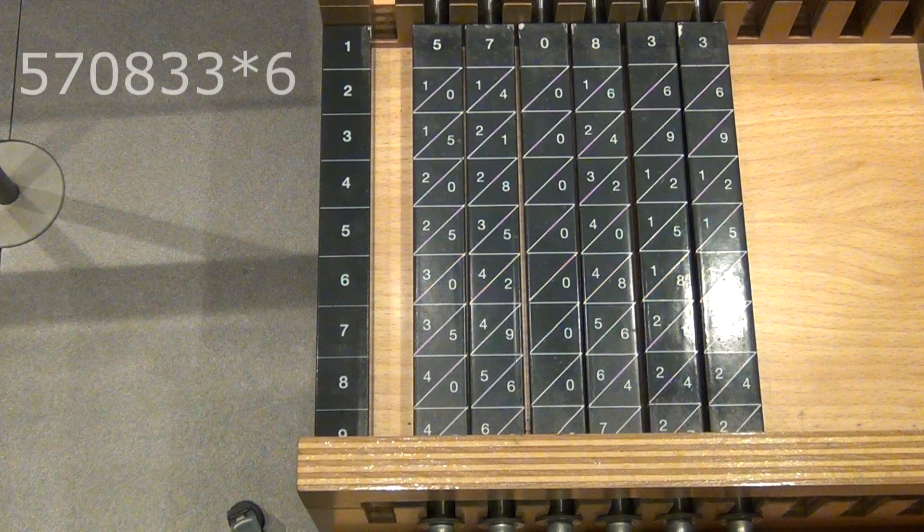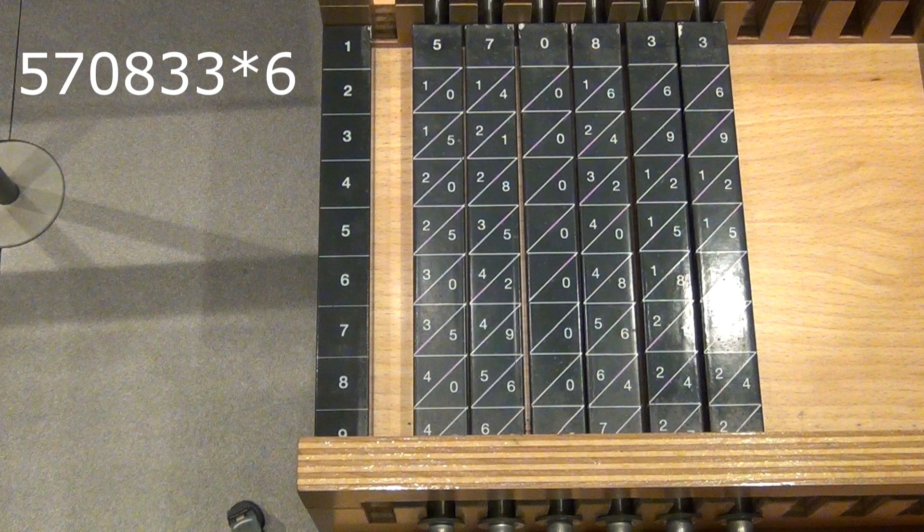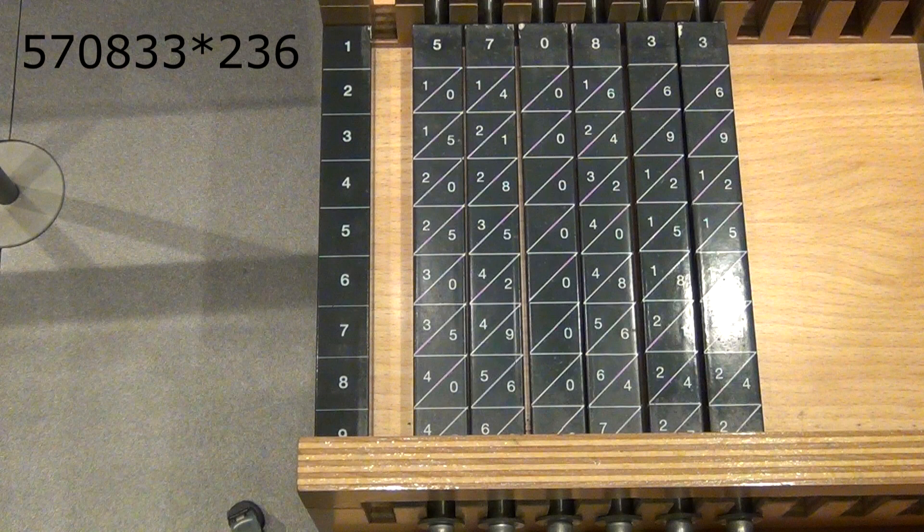Now, you might say, okay, but only one of the numbers is really big. What if I want to multiply with a number bigger than 9? Well, there is a way. Let's say, instead of calculating 570,833 times 6, we will now try 570,833 times 236.